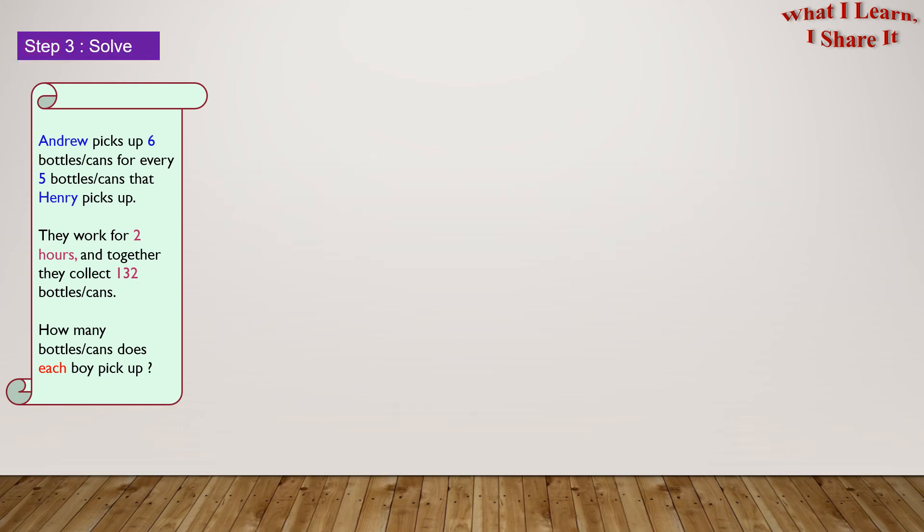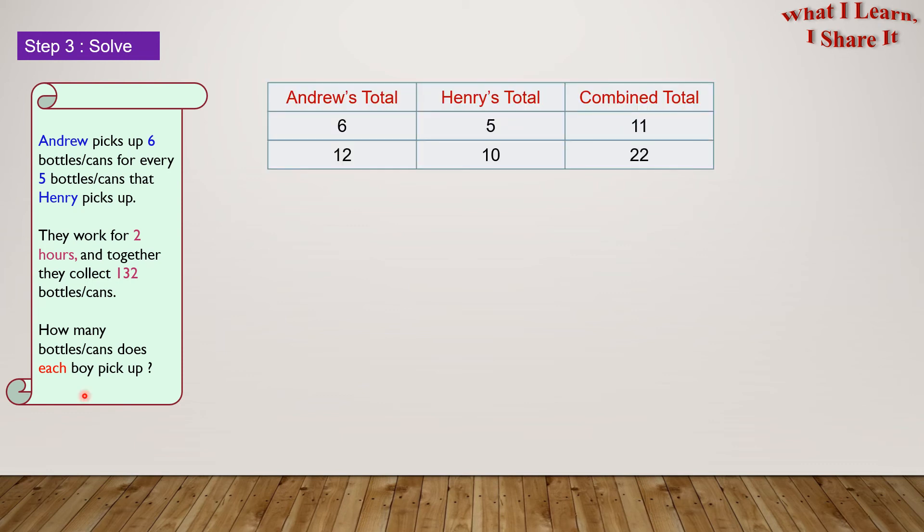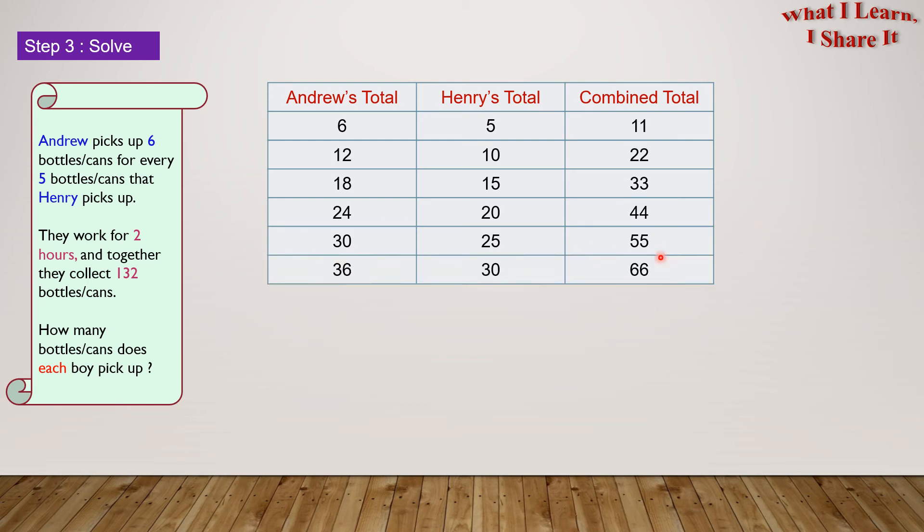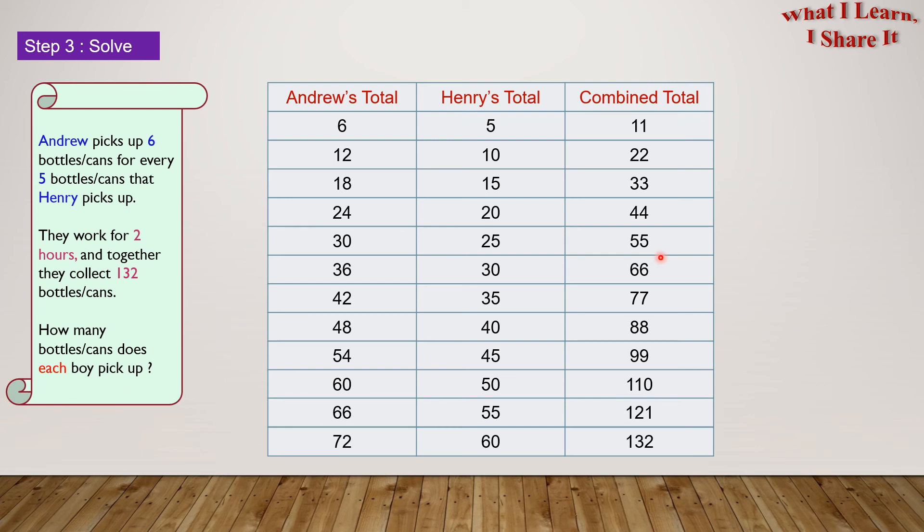Step 3. Solve! Now, let's put our plan into action. Right now, we have plotted what we have solved so far. On Andrew's total, we're doing count by 6. On Henry's total, we are doing count by 5. And on the combined total, we are doing count by 11s. If we continue this, then we will go till 132.